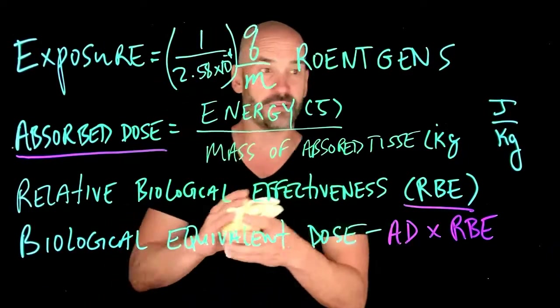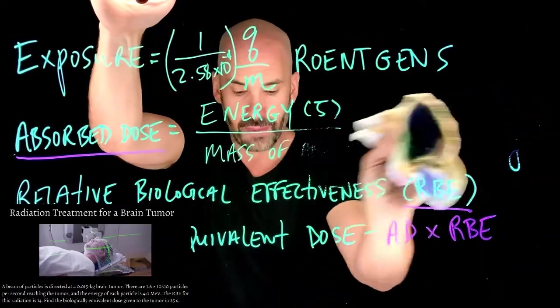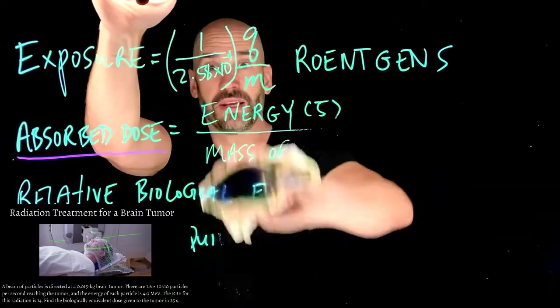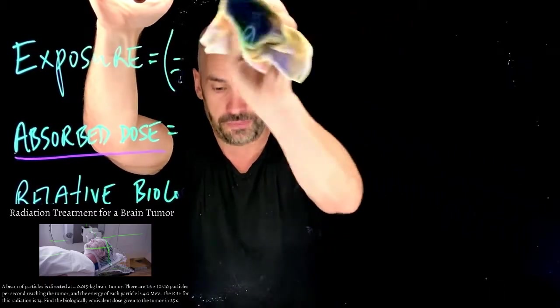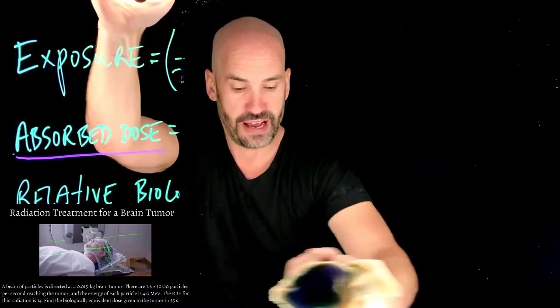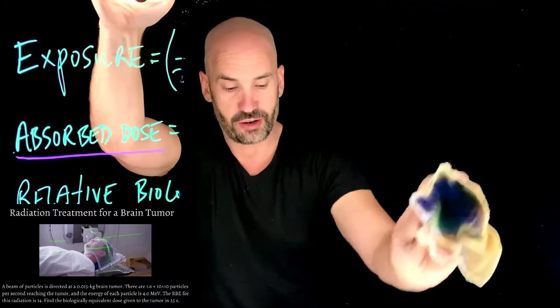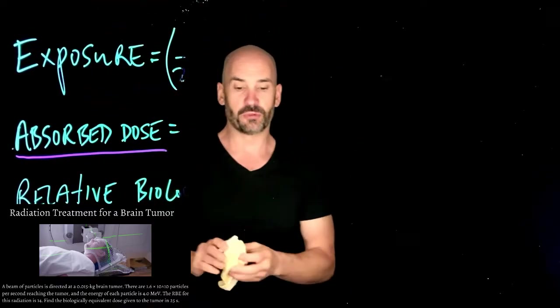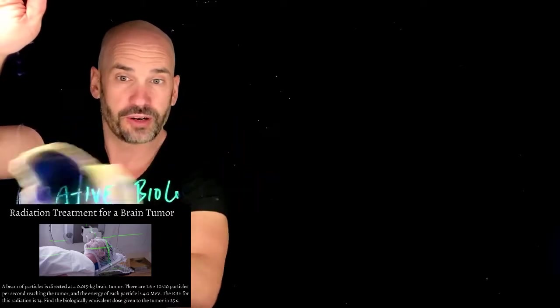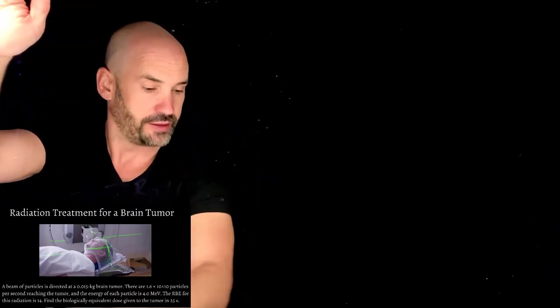Let us do a quick example. Let's take the example of radiation treatment for a brain tumor. Imagine that you have a beam of particles that is directed at a 0.015 kilogram brain tumor. There are 1.6 times 10 to the 10 particles per second reaching that tumor, and the energy of each particle is 4 mega electron volts. I'm giving you the RBE here, and it's 14. We want to find the biological equivalent dose of that tumor if the radiation has been blasting the tumor for 25 full seconds.